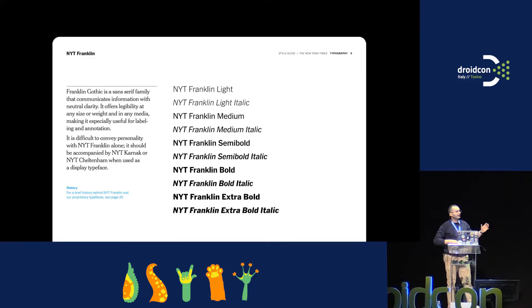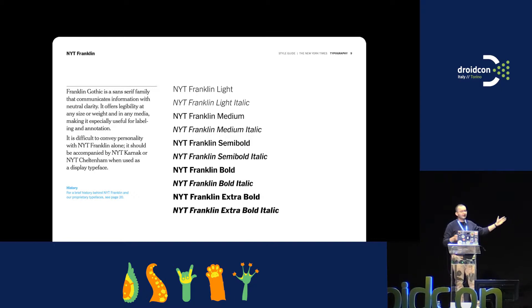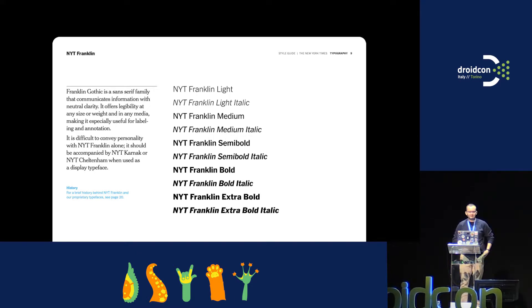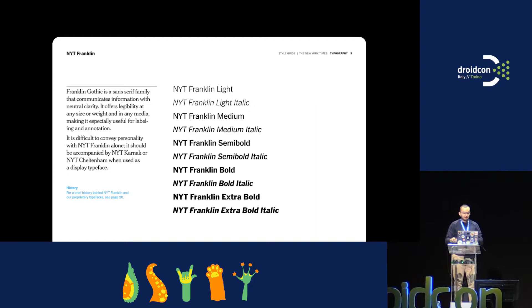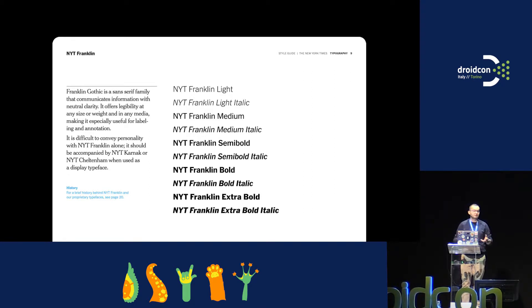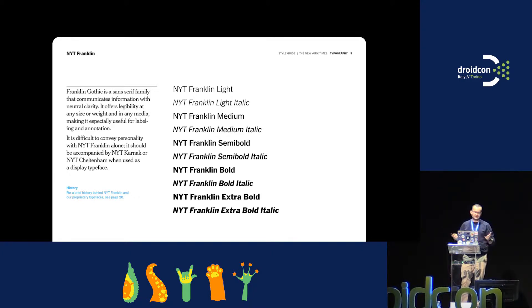In order to translate the newspaper into something digital, we have a bunch of documentation that product designers use. This is an example of Franklin — one of our typefaces. There are a whole set of styles, describing when you can and can't use this typeface and what it should be used for. But this style guide is only page nine. There are many more pages defining when you should use the entire nameplate versus the super T, how to treat icons, what colors you can use for different products.